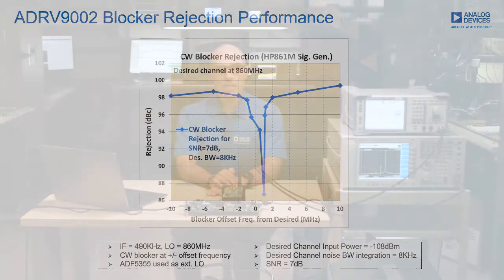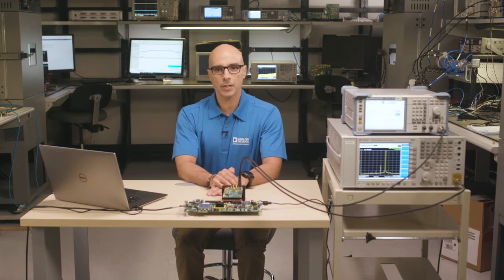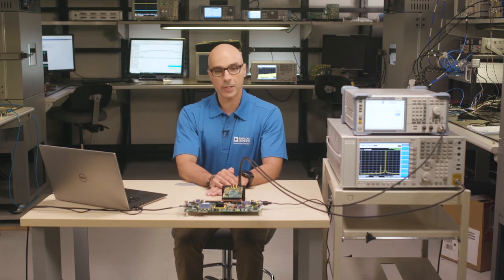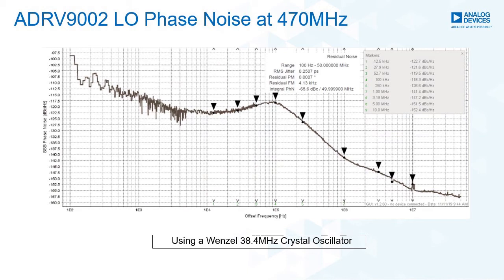A key metric in a high dynamic range receiver is phase noise. So let's have a look at the phase noise performance of the internal LO of the ADRV9002. With the device clock connected to a 38.4 MHz Windsor cluster oscillator, this is the phase noise at 470 MHz LO.